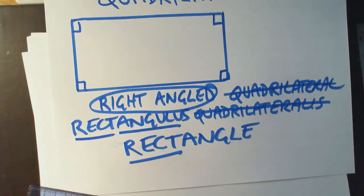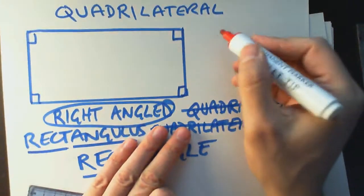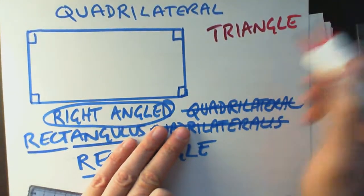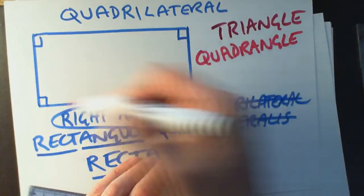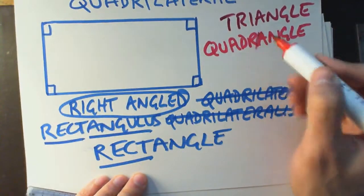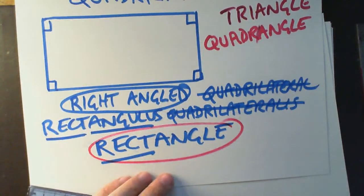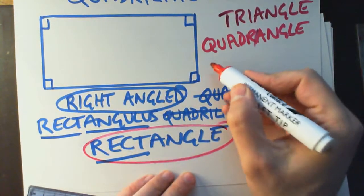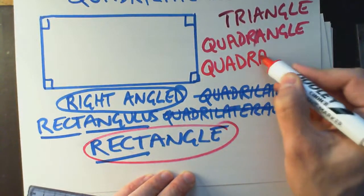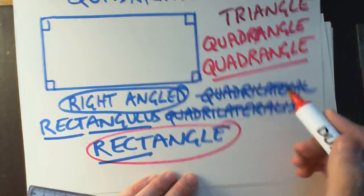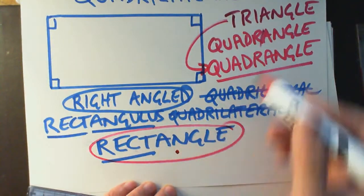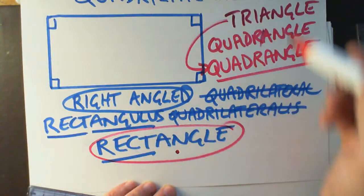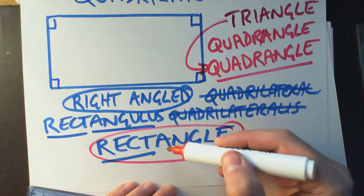Just like a triangle has three angles, if we were being logical we would have a triangle and a quadriangle. And in fact this is a quadriangle, but we don't call it that — we call it a rectangle. The word quadriangle does exist, but rectangle is used much more frequently in mathematics textbooks.